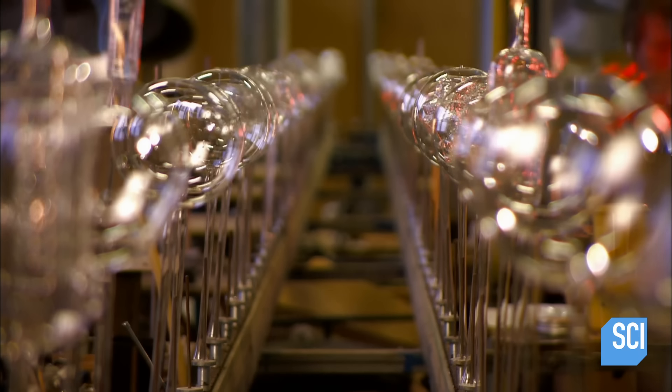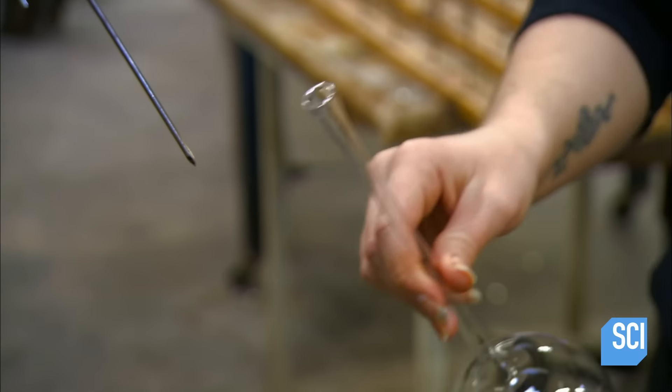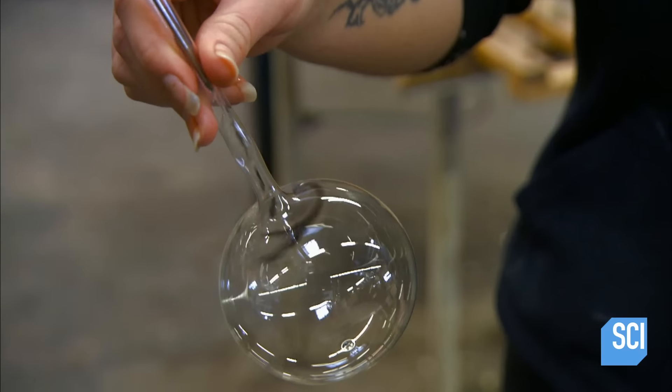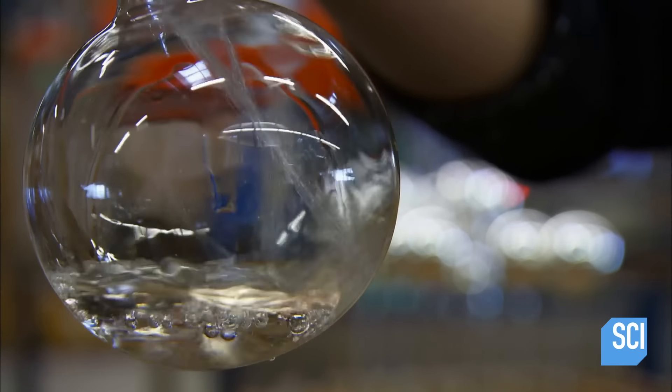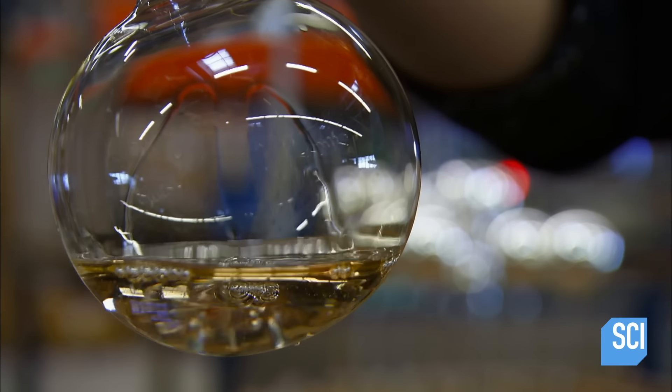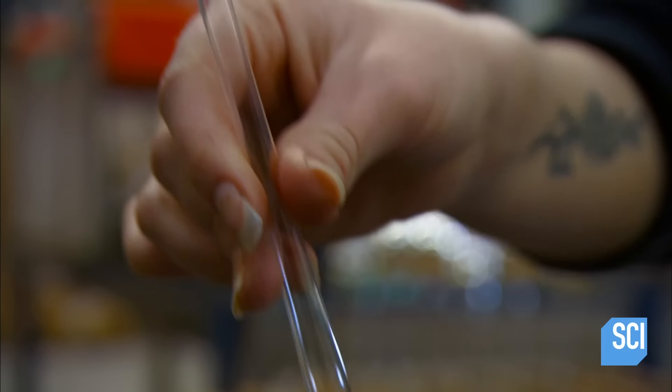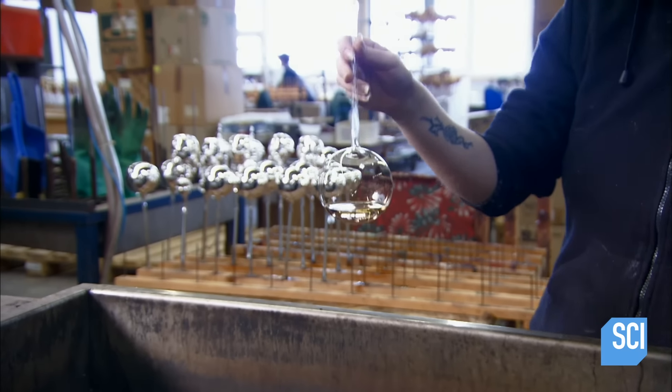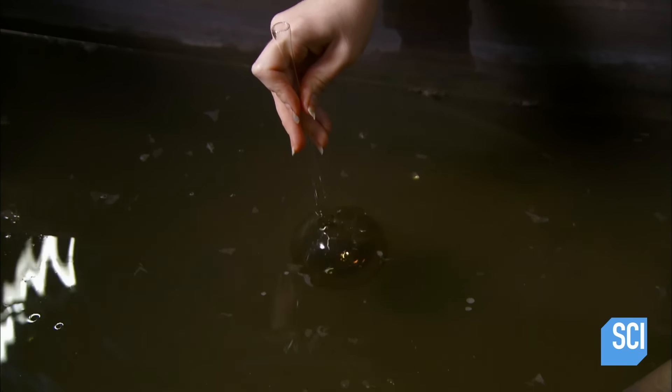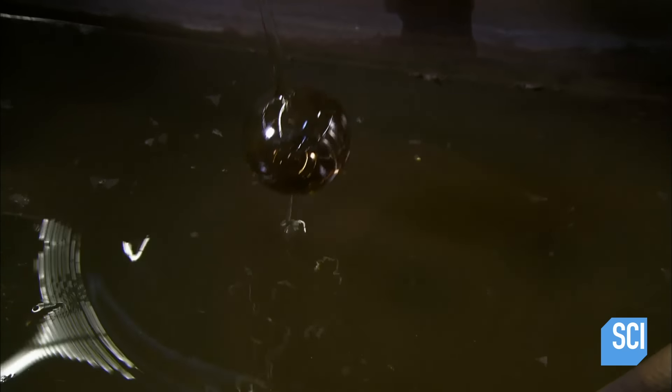The ornaments now head down the line to get some shine. This will be an inside job. The glassmaker pours silvering solution into the baubles through the stem. She then dips the baubles in warm water. This activates the silvering chemicals and shaking the ornament accelerates this process.